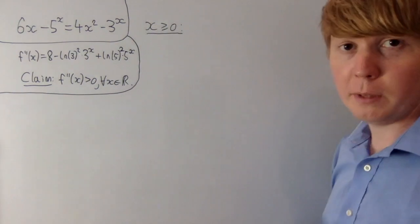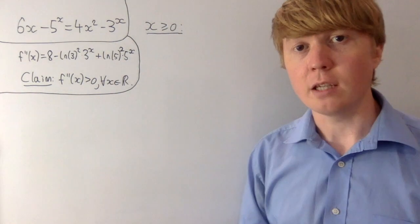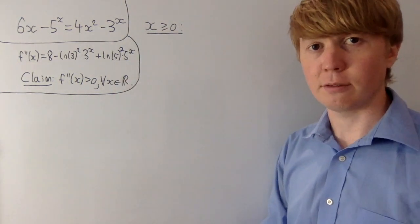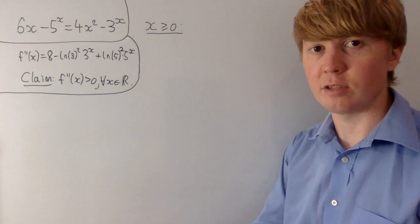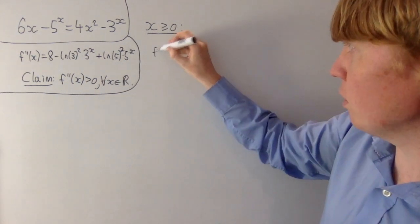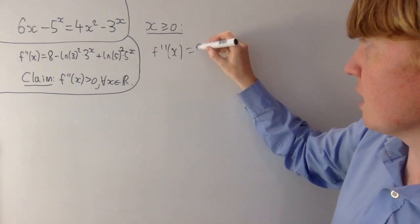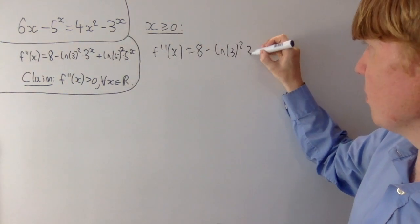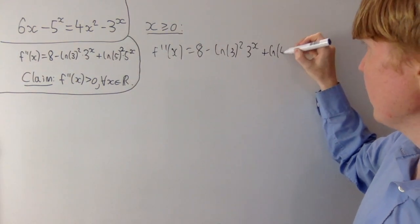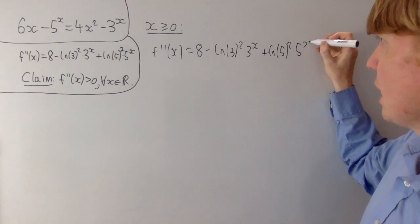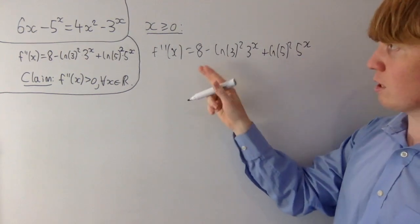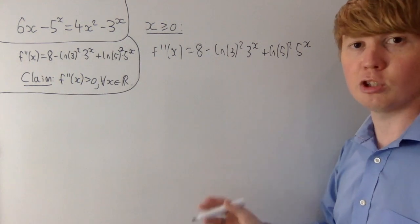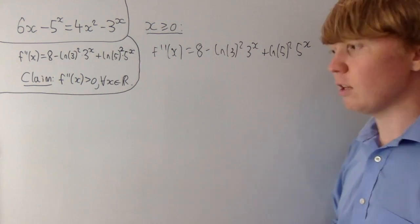We'll prove this inequality by splitting into two cases: where x is greater than or equal to zero, then where x is negative, because we get quite different behaviour on either side of zero. The second derivative is 8 minus ln(3) squared times 3 to the x, plus ln(5) squared times 5 to the x. We'll show this is greater than something, then greater than something else in a chain, and eventually show it's all greater than zero.